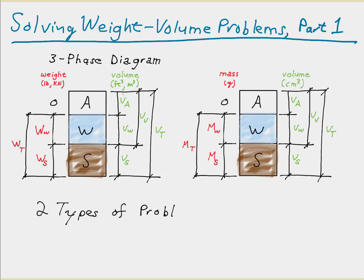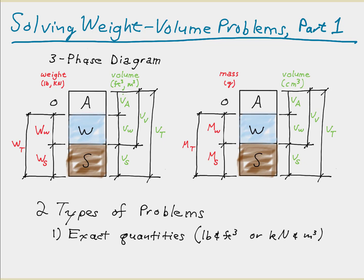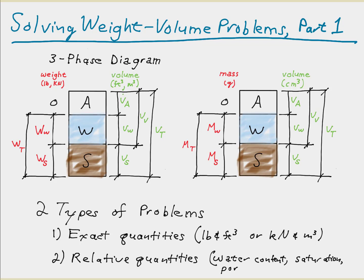There are two different types of problems when working with phase diagrams. The first type is when we are given exact quantities for the soil component phases — weights in pounds or kilonewtons, and volumes in cubic meters or cubic feet. The second type is when we are given relative quantities such as the degree of saturation, the water content, or porosity. This webcast covers the first type of problems; the second type will be covered in a separate webcast.